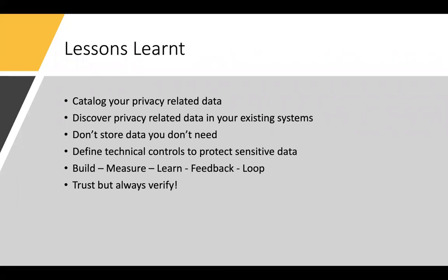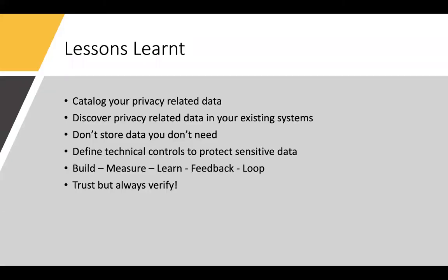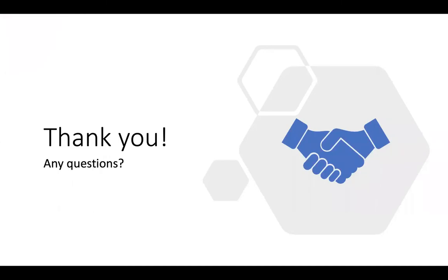Lessons learned - this is really my last slide. Catalog all your data - it's very important, you cannot protect anything you don't know. Discover privacy-related data in your existing systems - a very important activity, and there are many tools available; something I personally use is Nessus to identify systems and data. Don't store data that you don't need. Once you've cataloged all your data and created a framework, define technical controls to protect sensitive data. Continuous assurance is summarized in this line: build, measure, learn, feedback, and loop. In a privacy world, it's very important that you trust, but at the same time verify - and the only way to verify is continuous assurance.